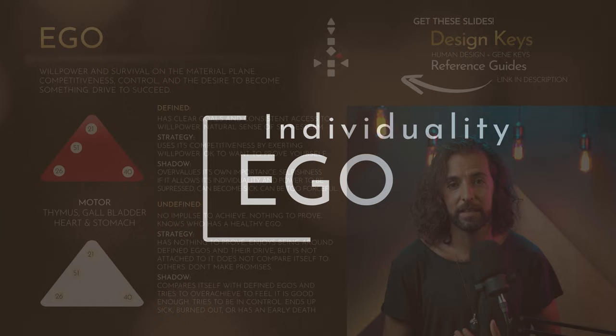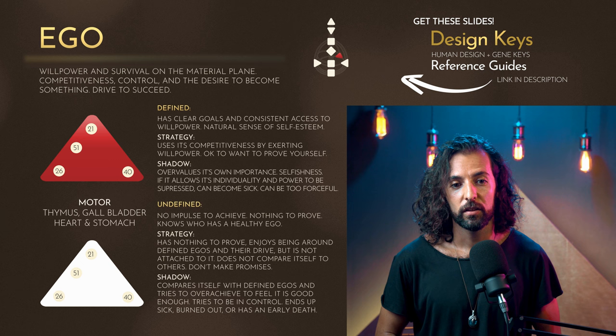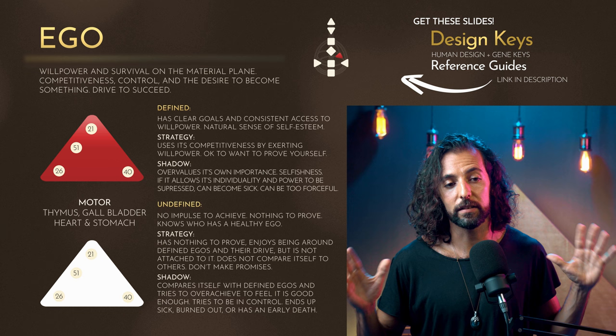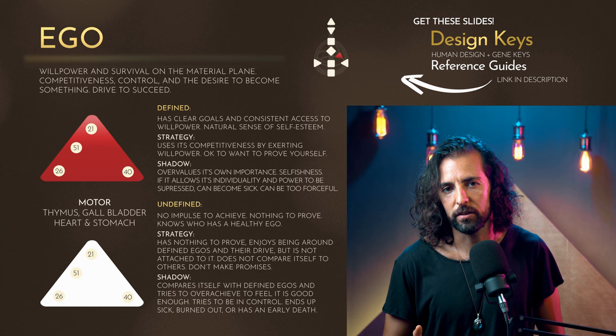The ego center moves from the ego — being self-identified and egocentric — to willpower and wanting to achieve things, and then into complete surrender into the divine will. When you have the ego center defined, it makes you want to achieve things, prove yourself, and show everyone you can do it. It's a 'superstar' kind of center that gives you the power to conquer — the Cristiano Ronaldo type of energy, if you will.